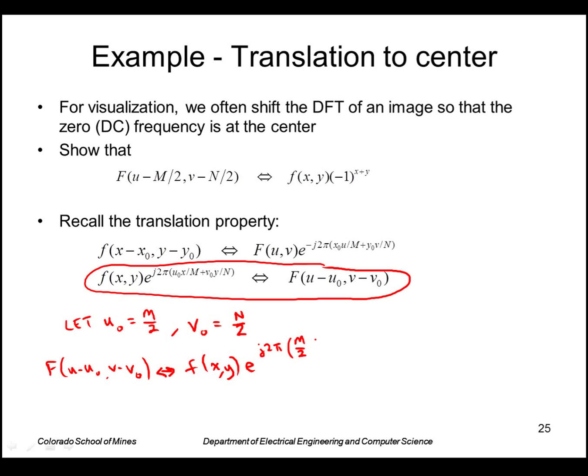So the M's and N's cancel out, and we get e^(j2π(x/2 + y/2)), or f(x,y)e^(jπ(x+y)). Now I'm going to write f(x,y)e^(jπ), and that whole quantity raised to the (x+y).